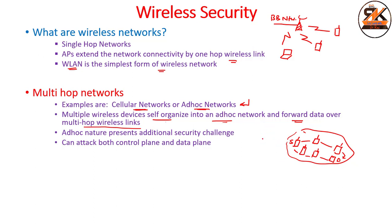Ad hoc networks are examples of multi-hop networks. They have an ad hoc nature and present additional security challenges because they are open — the air medium is open and an attacker can connect anywhere in the network. One of the devices may be the attacker's device, which can capture traffic, forward traffic, and also send its own malicious scripts to other devices. Once executed on a user's device, this malicious code can infect the user's data.